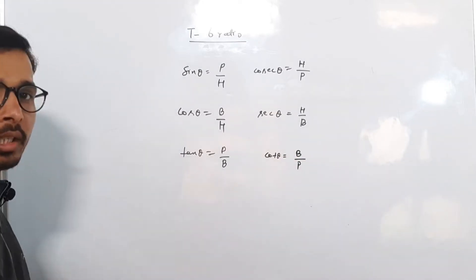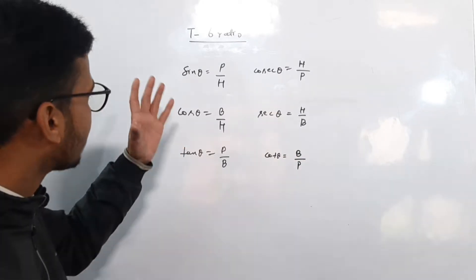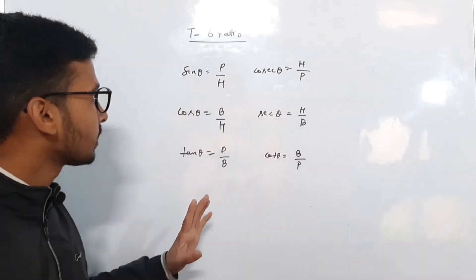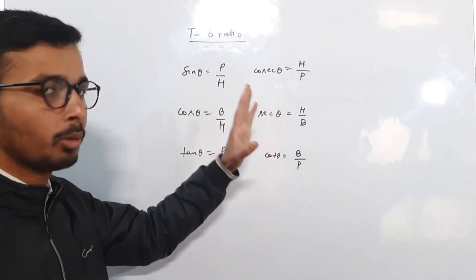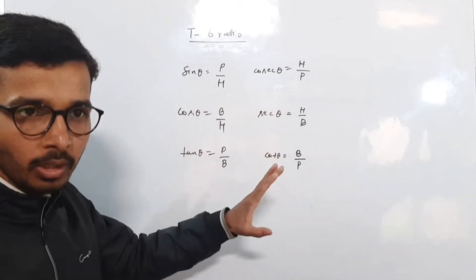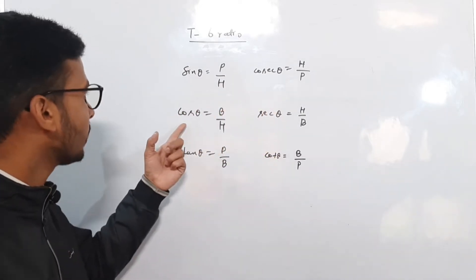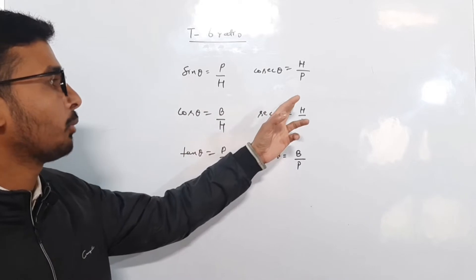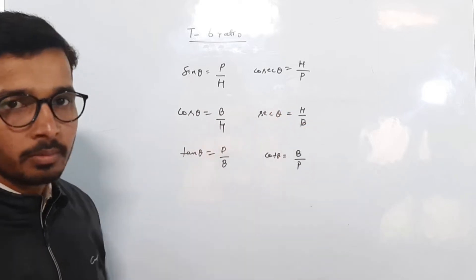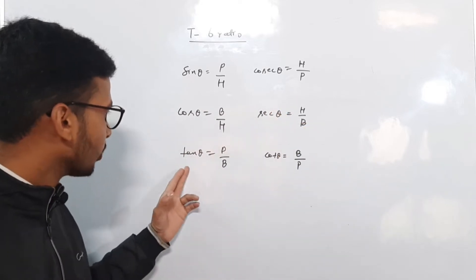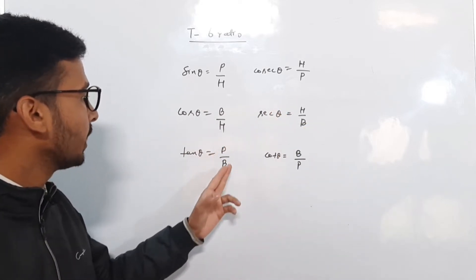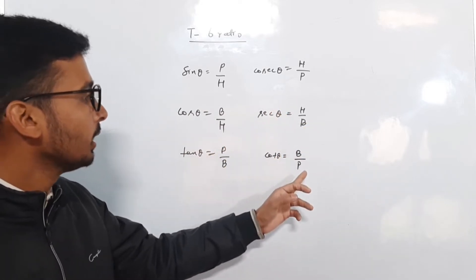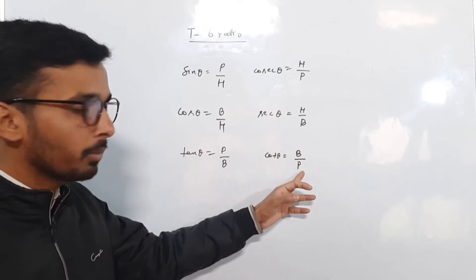So first, we will revise this. Sin theta is perpendicular upon hypotenuse. Cosec is hypotenuse upon perpendicular. Cos is base by hypotenuse. Sec is hypotenuse by base. Tan is perpendicular by base. And cot is base by perpendicular.